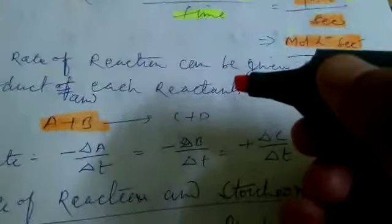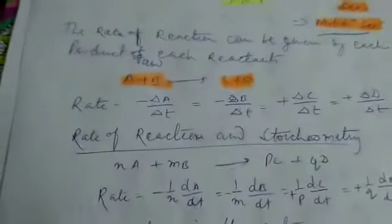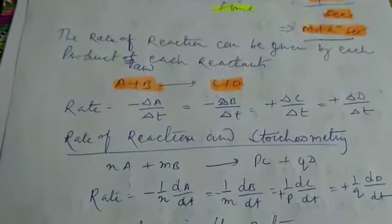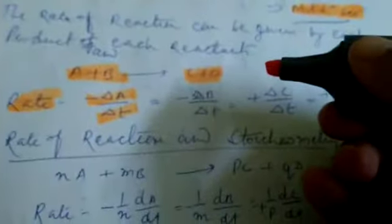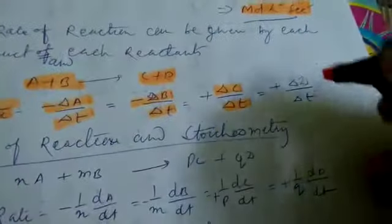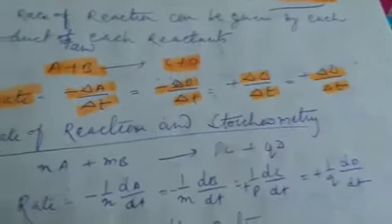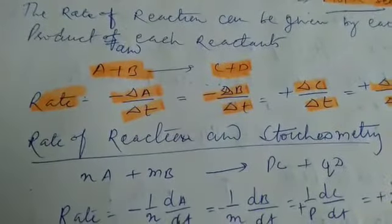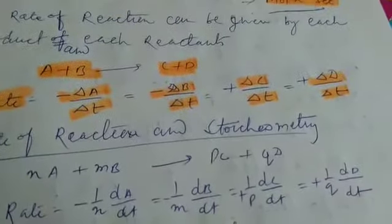A plus B are reactants where C plus D are products. So rate of reactions can be defined by each reactant and each product in this way: minus delta A upon delta T, minus delta B upon delta T, plus delta C upon delta T, and plus delta D upon delta T, where A and B are reactants and C and D are products.